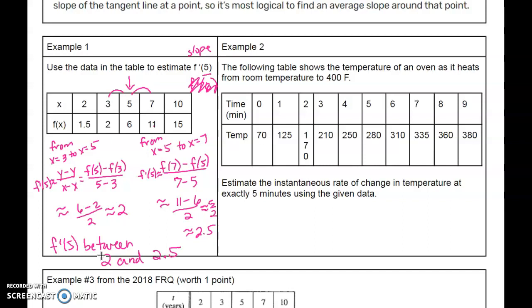Let's look at the next one. This was from a free response question. We've got the temperature of an oven as it heats from room temperature. Zero to 9 minutes, we can see our temperature is increasing. Estimate the instantaneous rate of change at exactly 5 minutes. So we want f'(5), and 5 is given, so I'm going to use the above and below values.